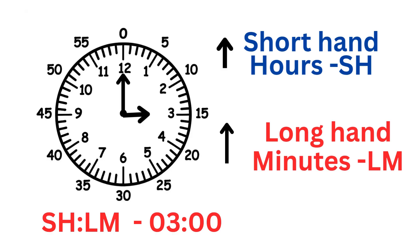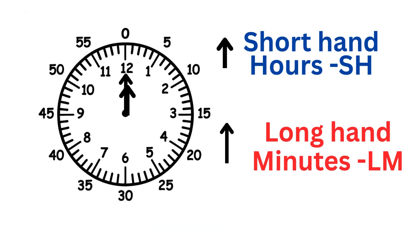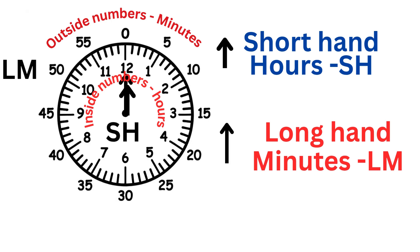The clock shows three hours, colon, zero minutes. Now take a closer look: the inside numbers are for hours, which is called SH. The outside numbers show minutes, which is called LM.